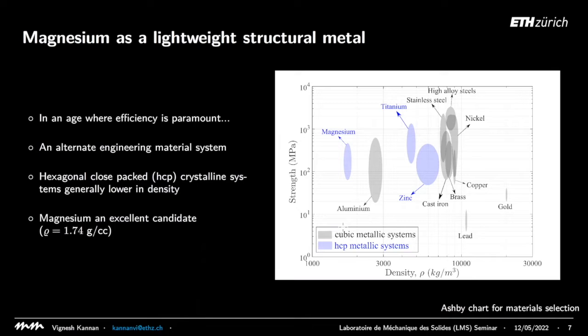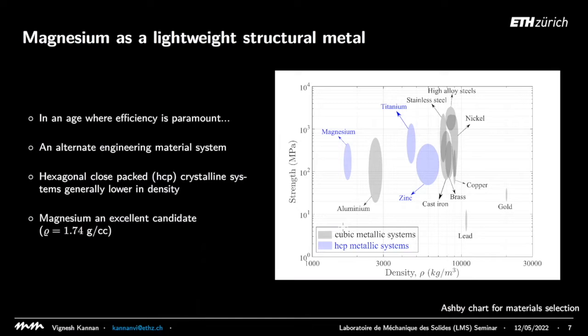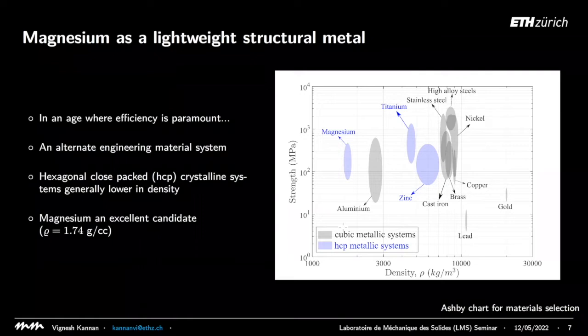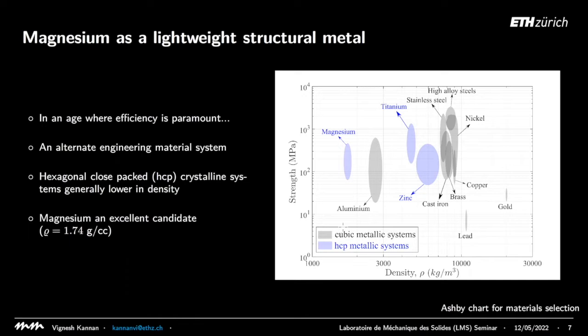We'll start with magnesium. This is a classic Ashby chart where you have the strength of a metallic system as a function of density. The density of magnesium has a very low value compared to most other structural metals. The question raised a few decades ago was: how do I exploit this low density to improve your power-to-weight ratio in vehicles and different applications, and how would I control material response to exploit this low density while getting greater dynamic strength?